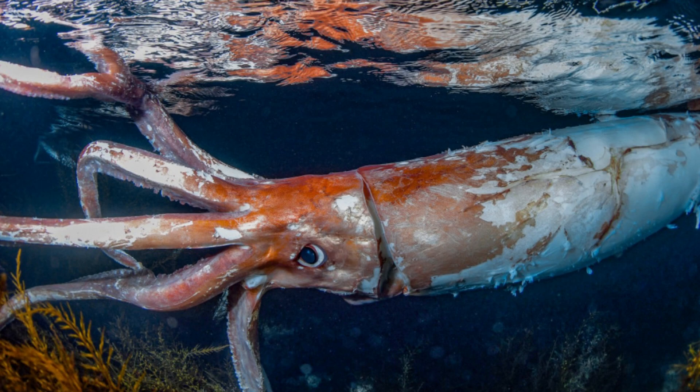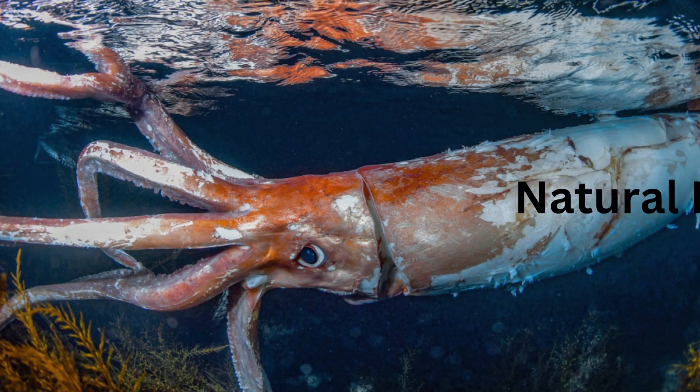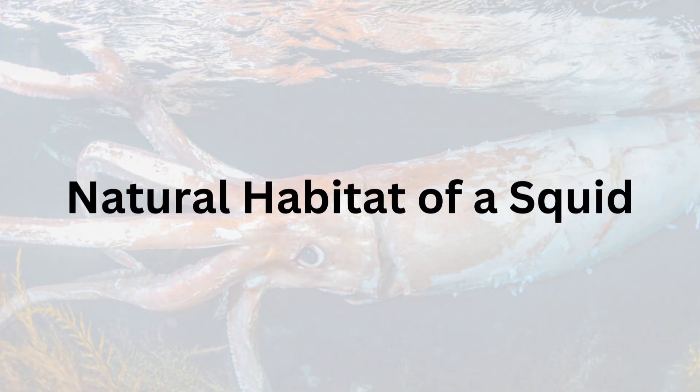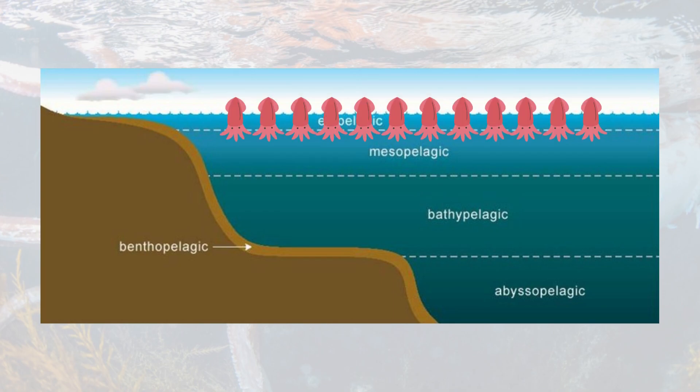Let's start by talking about the natural habitat of a squid. Squid are found in various types of ocean, from shallow water to deep sea, and in various types of temperature. Most squid are found in the epipelagic zone, which is the uppermost layer of the ocean. The zone ranges from the surface of the ocean to a depth of 200 meters. In the epipelagic zone, there is abundant sunlight that supports photosynthesis of plants and organisms, making this layer home to the majority of marine life.